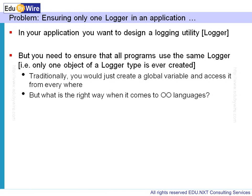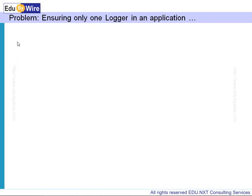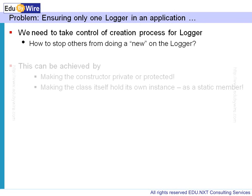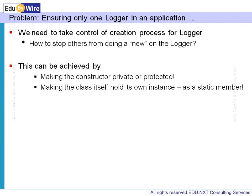What is the right way of doing it in an object-oriented language? Logger is an example here — it's the problem context we are working on. The generic design problem is to take control of the creation process of the logger object. That means we need to stop others from making a new call onto the logger. You can do that by making the constructor private or protected. When you do that, the new operator will not work — it will give compilation errors. Still, you need to hold that instance of logger somewhere, so you create the instance and hide it inside the class itself, making it a static member, because it will hold only one single instance.